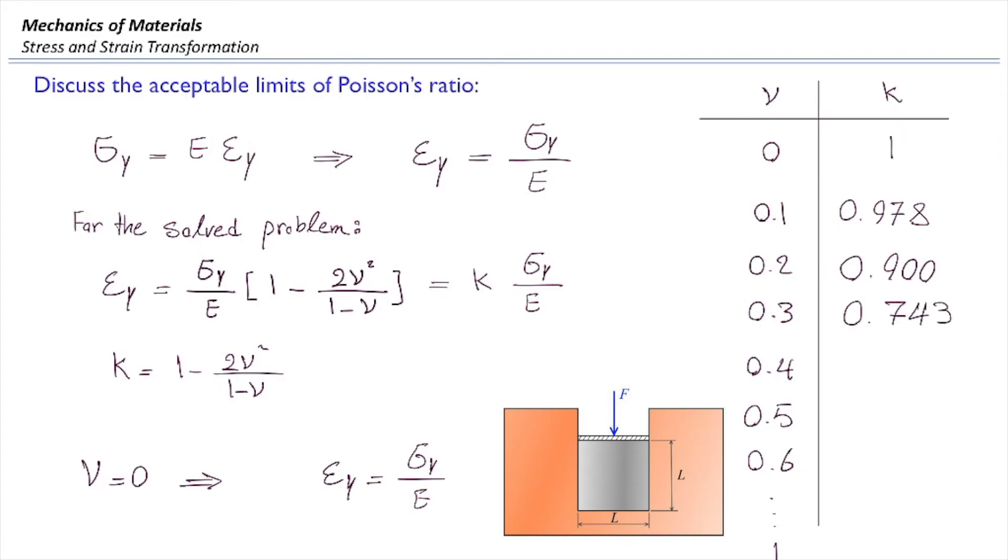So now it has reduced by 10%. How much is that for 0.3? 0.743. Now it has reduced by about 16%. How much is that for 0.4? 0.467. Now it has reduced by about 50%.